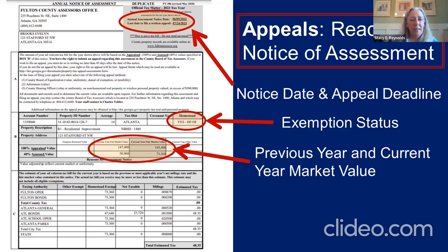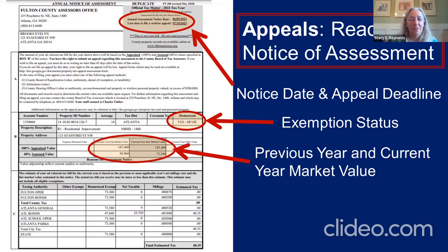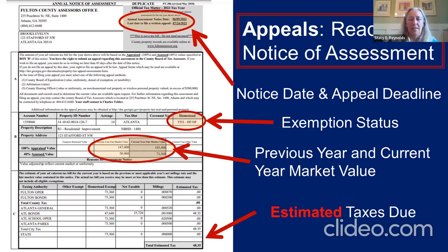They may want to think about appealing just because if they see it through to the board of equalization, they get a three-year freeze — so it's not going to go up for the next two years. That alone can be helpful, and certainly if it's a big jump, they may want to consider appealing, especially if it affects the estimated tax at the bottom.